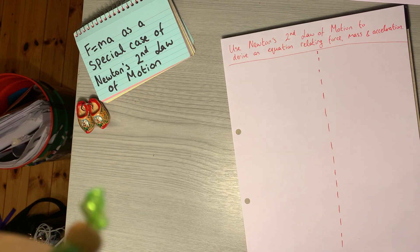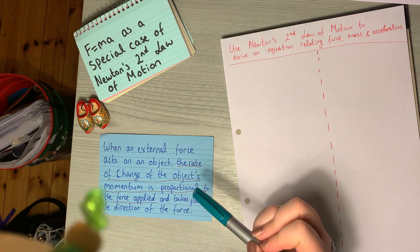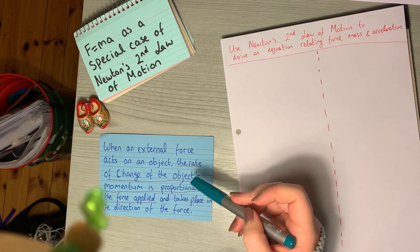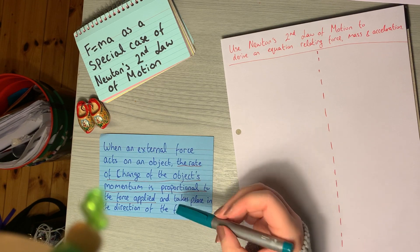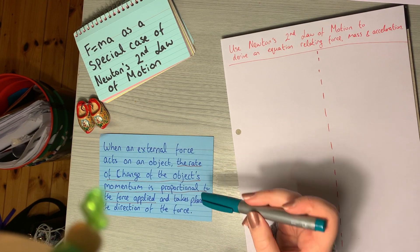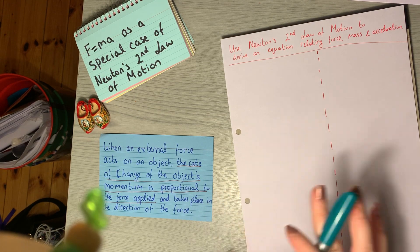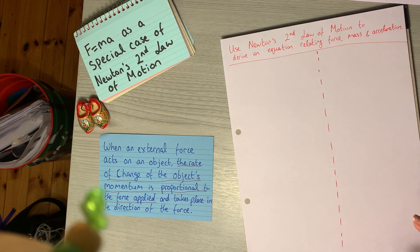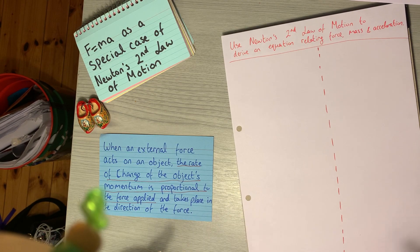Let's have a look first at Newton's second law of motion. It states when an external force acts on an object, the rate of change of the object's momentum is proportional to the force applied and it takes place in the direction of the force. That's quite a mouthful, so let's break it down and just look at the parts that we need to form an equation first.